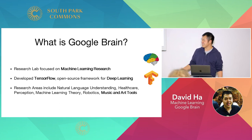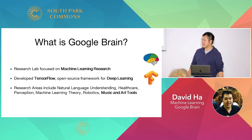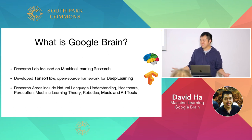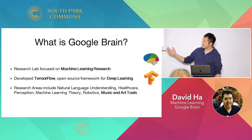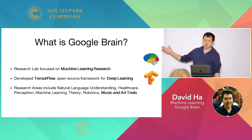There are more competitors these days, I know. The research areas of Google Brain include natural language understanding like machine translation, healthcare, computer vision, perception, machine learning theory — we kind of want to know what's actually going on — robotics, and what we're doing: we're focused on music, art, and tools in a project called Magenta.